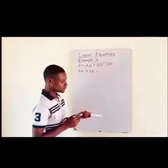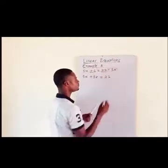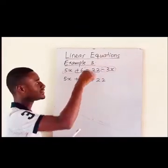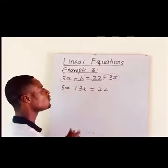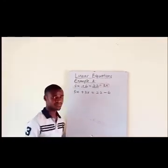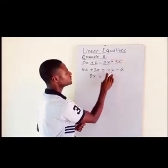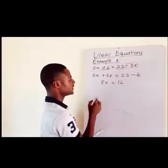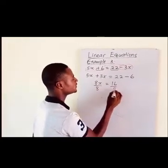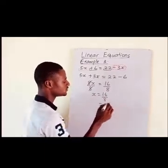Then we will have our equal sign. At the right hand side we have the number term 22. Positive 6 must also move to the right hand side, but because it is moving across the equal sign it becomes negative 6. Then 5x plus 3x gives us 8x, and 22 minus 6 gives us 16. Dividing through by the coefficient of x, x is equal to 16 divided by 8, which gives us 2.